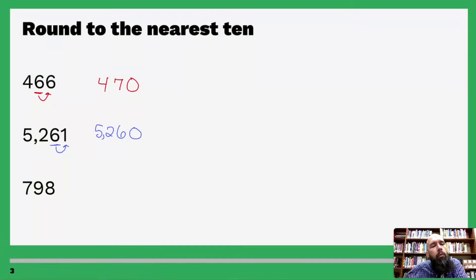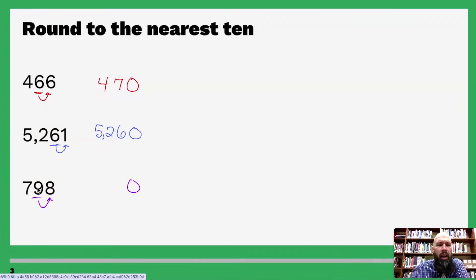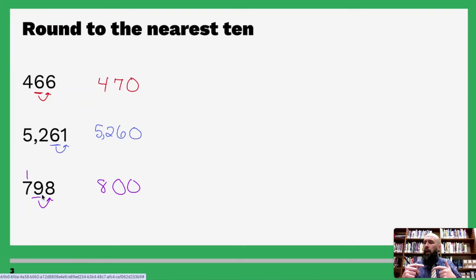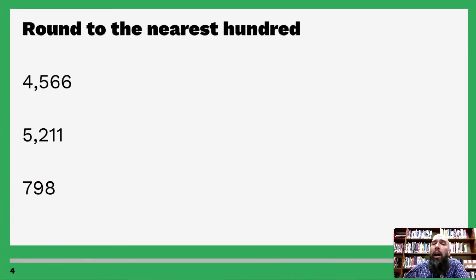Round to the nearest ten — now this is where the game changes slightly. Five or above, give it a shove — yep, eight is five or above — so let's turn eight into zero and move up nine. But if we move nine up, nine becomes ten, so you actually put a zero there and carry the one to make it eight hundred. Sometimes you have to carry up to the next digit — nine gets shoved up to ten, you carry that one.